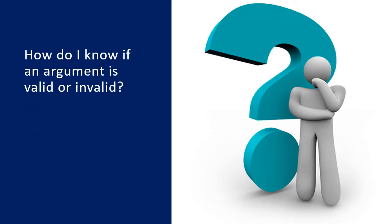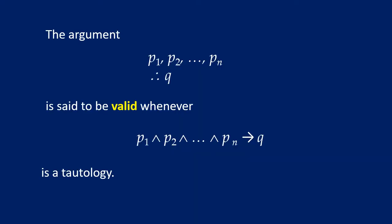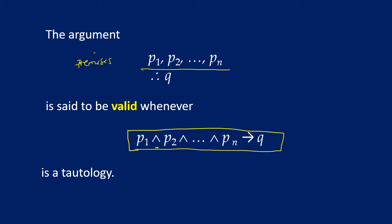How do we know if an argument is valid or invalid? We say that an argument is valid when: if all the premises are true, does it follow that the conclusion is true? If this conditional statement is a tautology — meaning it is always true — then we say that the argument is valid. An example of an invalid argument: just like in inductive reasoning, it doesn't mean something true for specific patterns is true for the general case.